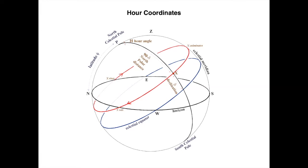So the hour angle of the star is zero when the star culminates and it increases from zero to 24 hours. Stars in the same hour circle have the same hour angle.